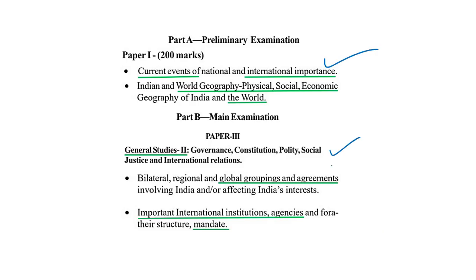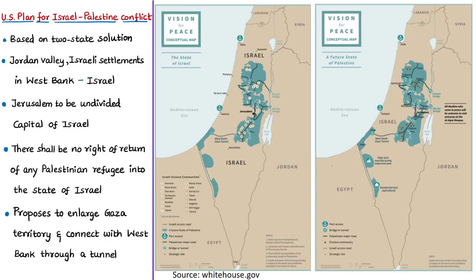The US plan is based on the two-state solution, which gained prominence since the Oslo Accord signed in 1993 between the Government of Israel and the Palestinian Liberation Organization. The two-state solution as per the US plan envisions a state of Israel as the nation state of Jewish people and a future state of Palestine as the nation state of the Palestinian people. The document says 'future state' because neither the US nor Israel currently recognizes Palestine as an independent nation.